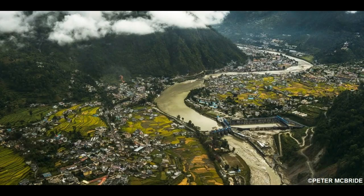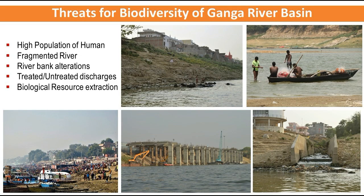The high-density of human population, along with infrastructure development projects, places the river and the life it supports under extreme threat. Anthropogenic activities, primarily irrigation and electricity generation, have resulted in a highly fragmented habitat in the river.